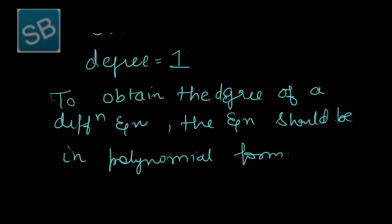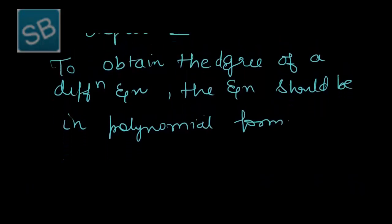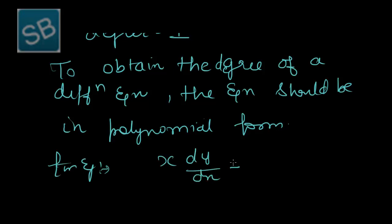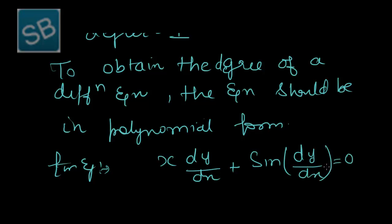If the equation is not in polynomial form then the degree cannot be obtained. For example, we have x(dy/dx) + sin(dy/dx) = 0. This is not in polynomial form because it involves the sine of the derivative. So how can we judge the degree? We cannot — its order is 1, but its degree cannot be determined.